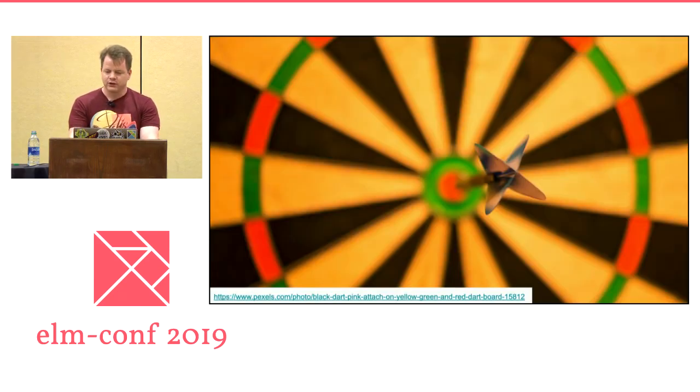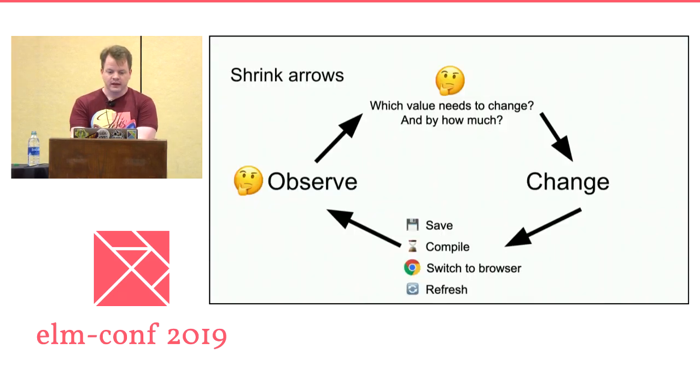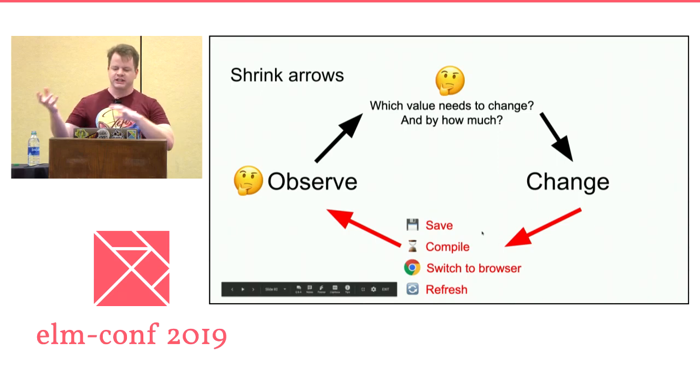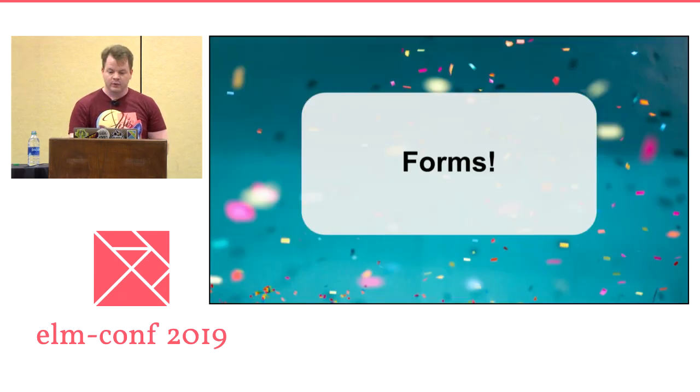All right. So what is my goal here? My goal is I want that same kind of instant feedback for tweaking these values. So where to begin here? Well, let's try to shrink some of these arrows down. So let's start at the bottom here. Why are we even switching context back and forth between an editor and a browser? Why don't we use forms? And forms are awesome. And Elm is actually really great at forms. So let's see what that would look like.